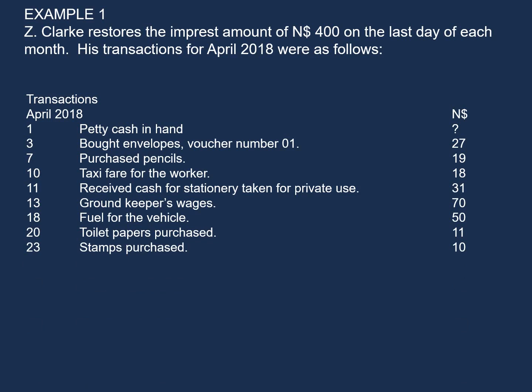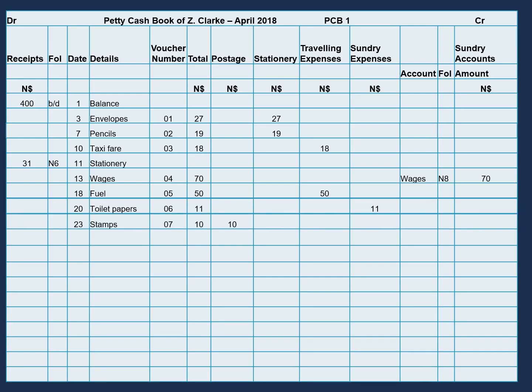Stamps purchased, $10. On the 23rd, stamps, the voucher number will be 07. The amount in the total column will be $10, and we will classify stamps under postages.